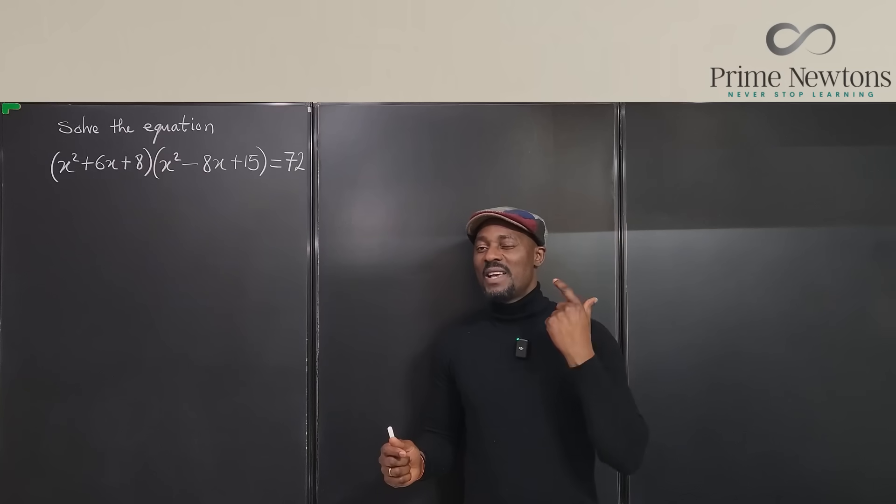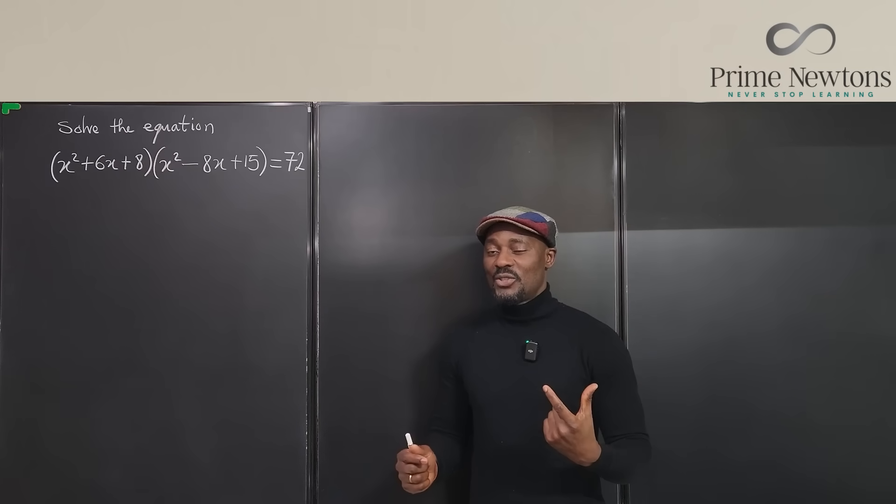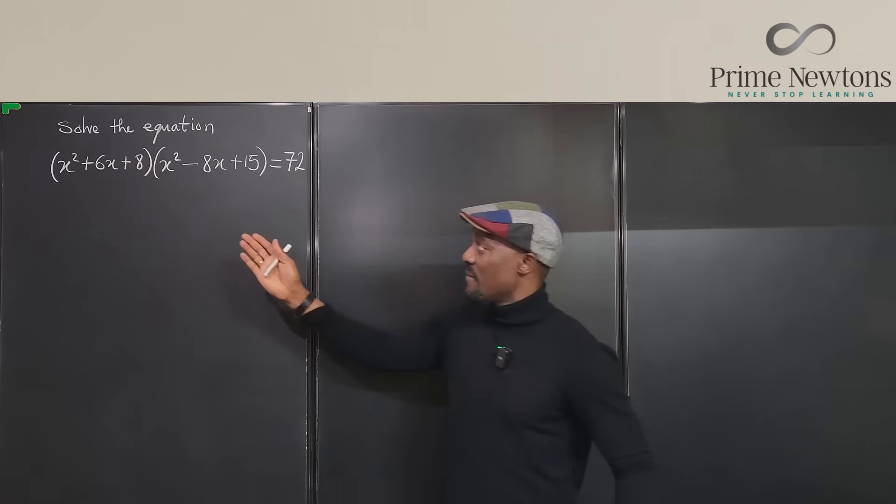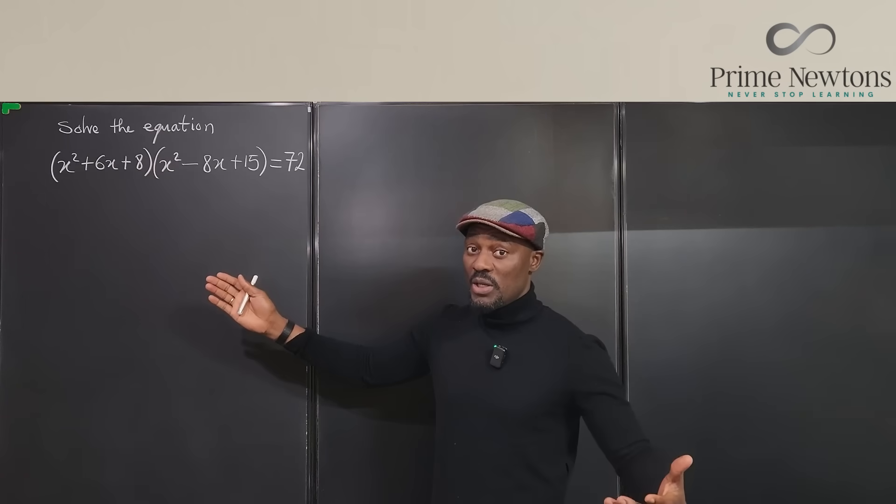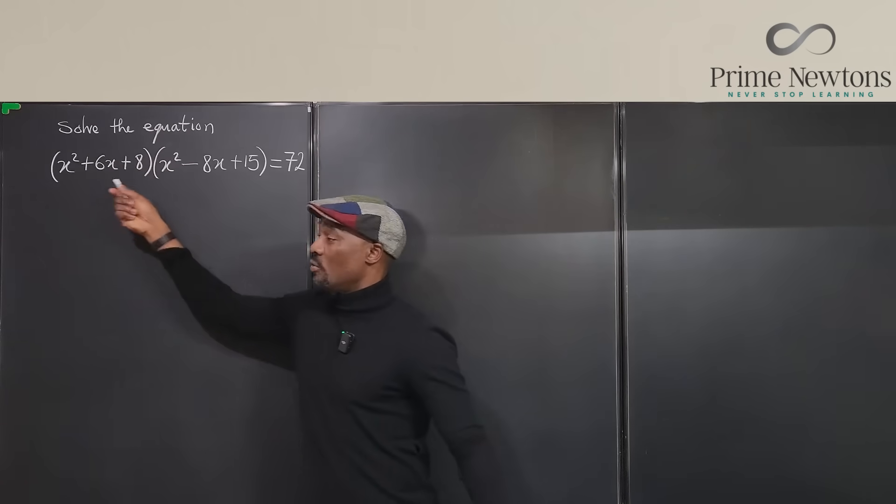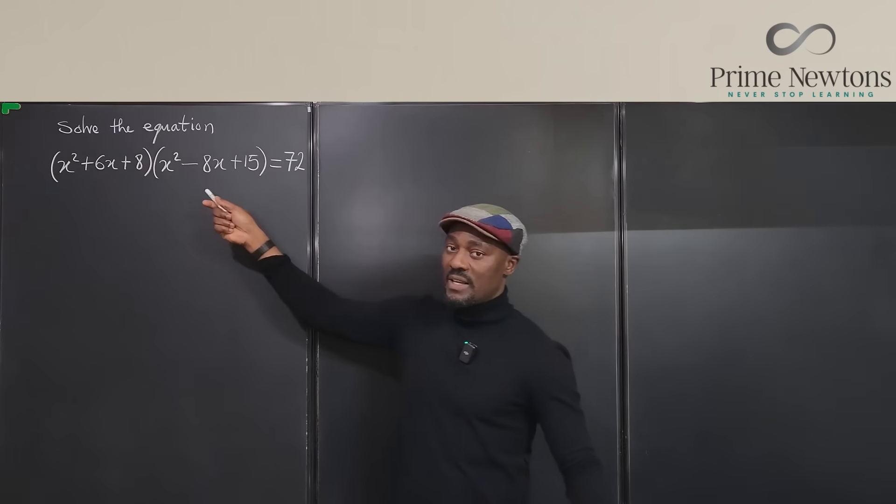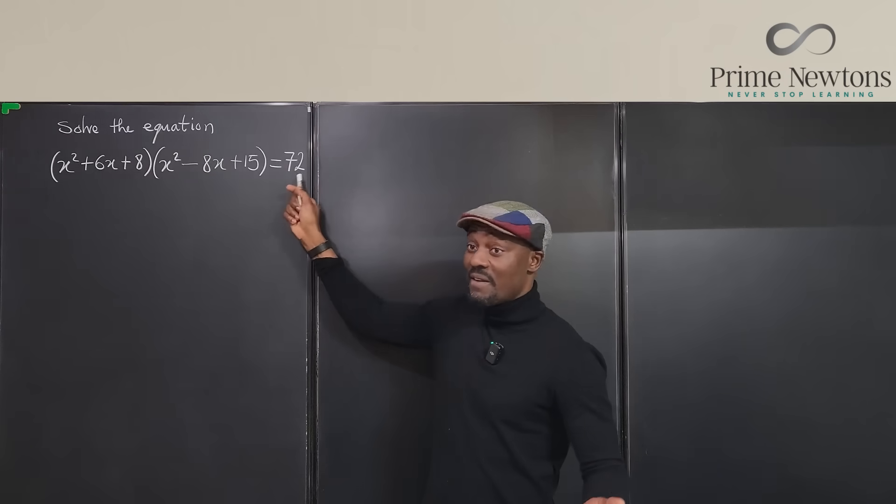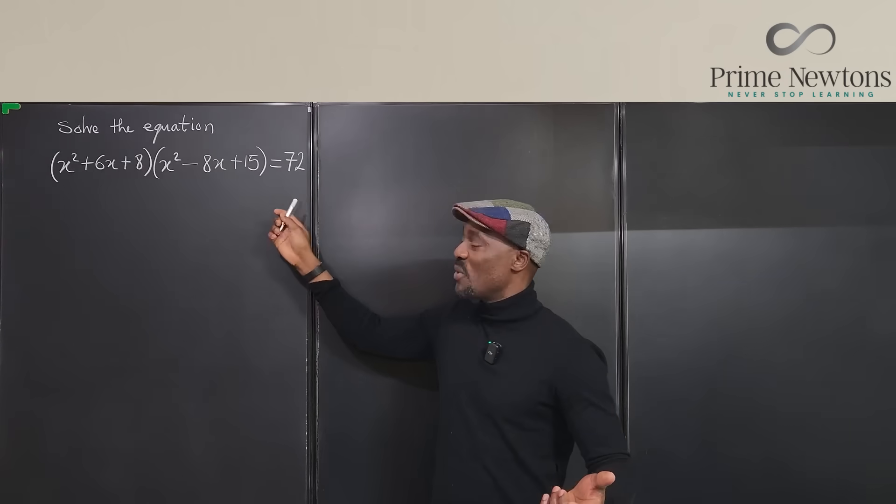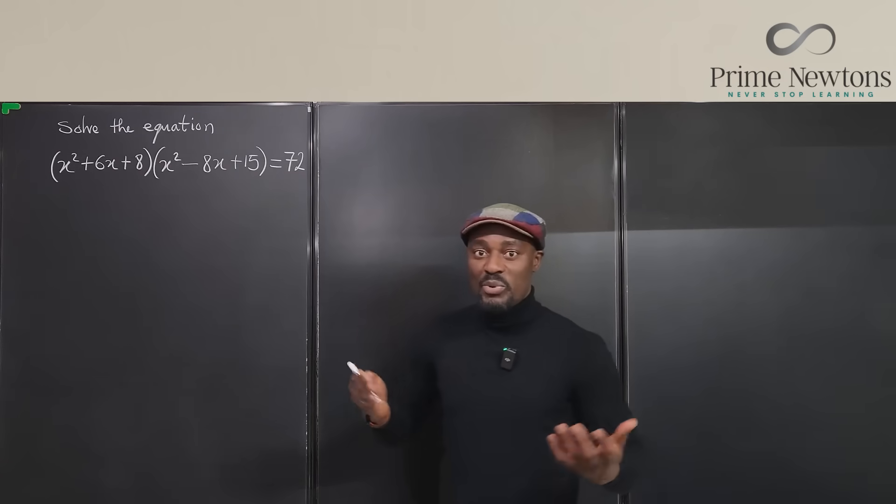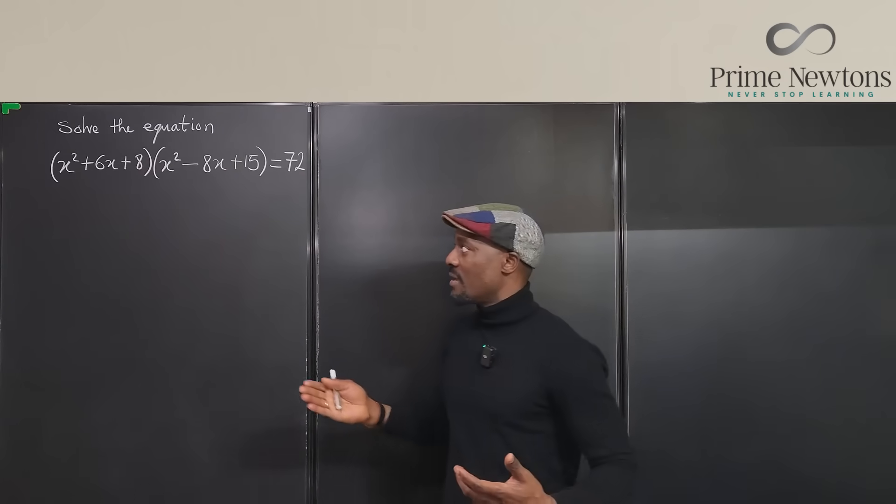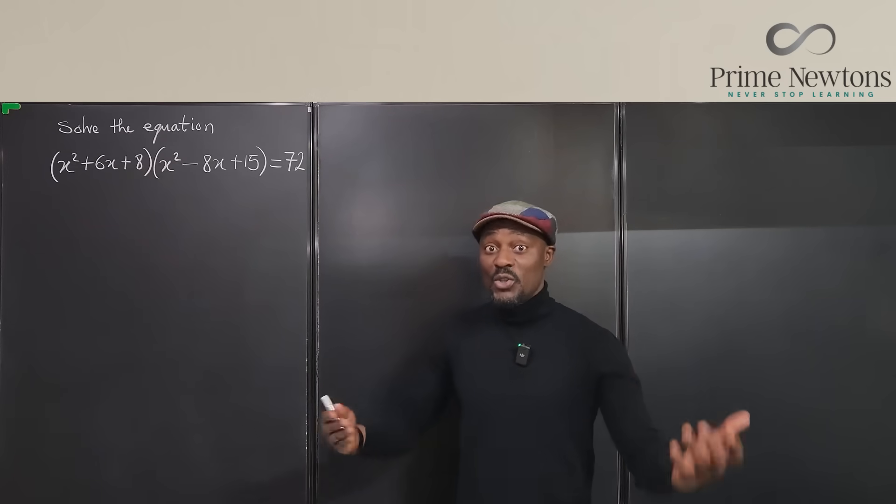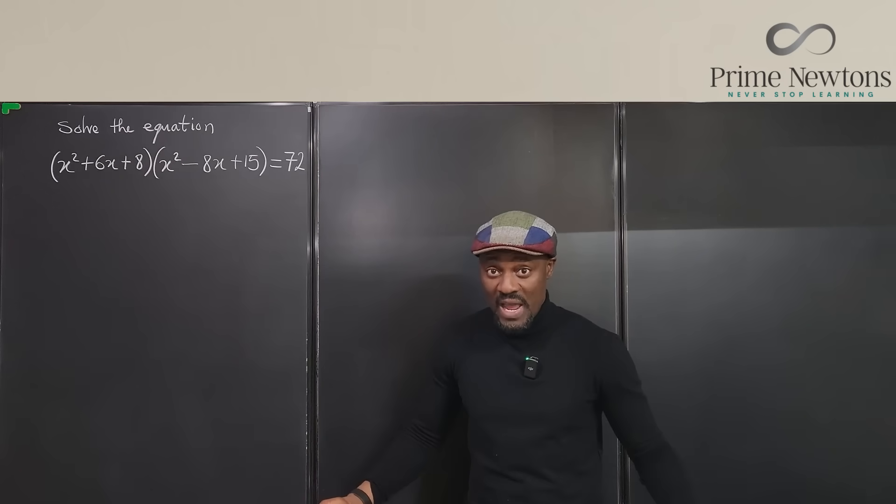It has an amazing trick that just makes life super easy. So here we have a fourth degree polynomial, which is a quadratic times a quadratic, but it's not equal to zero because if it were equal to zero, if the 72 was not here, we would just use the zero products property saying that each of these quadratics must be equal to zero and then we solve each of them and get our four answers.